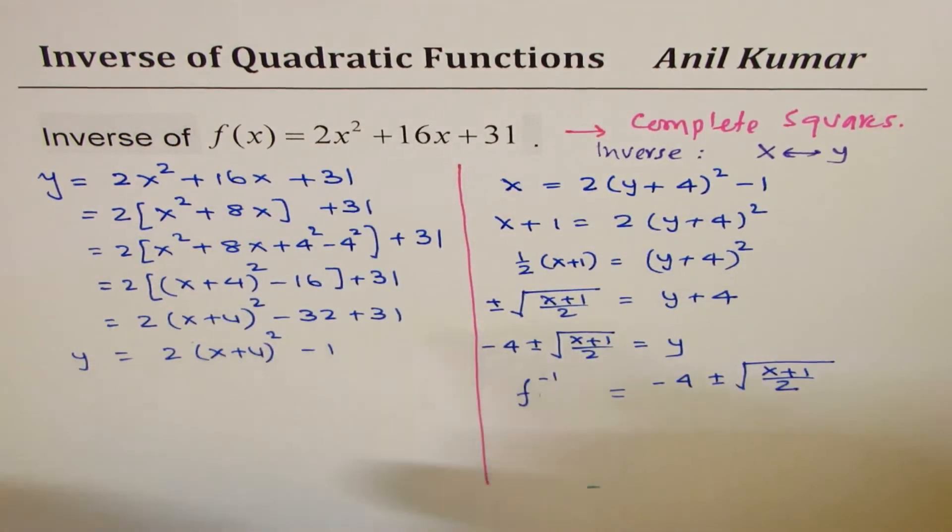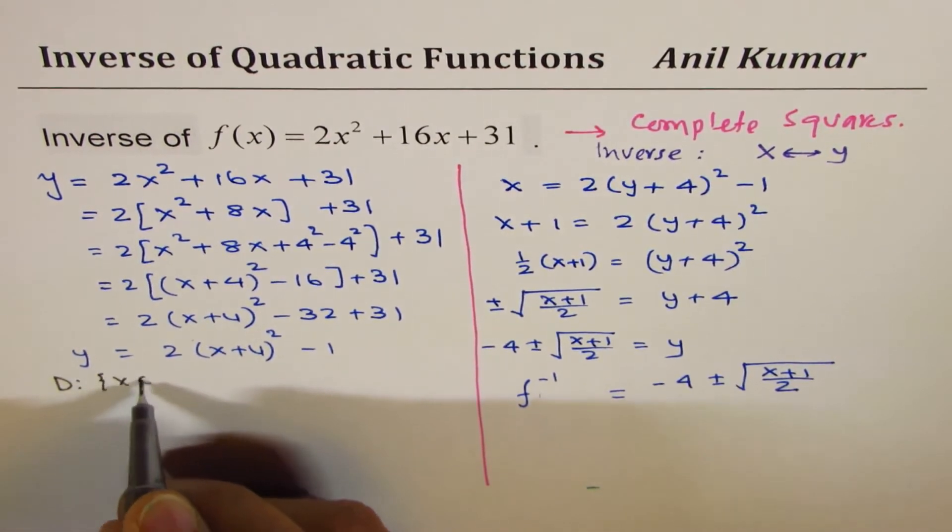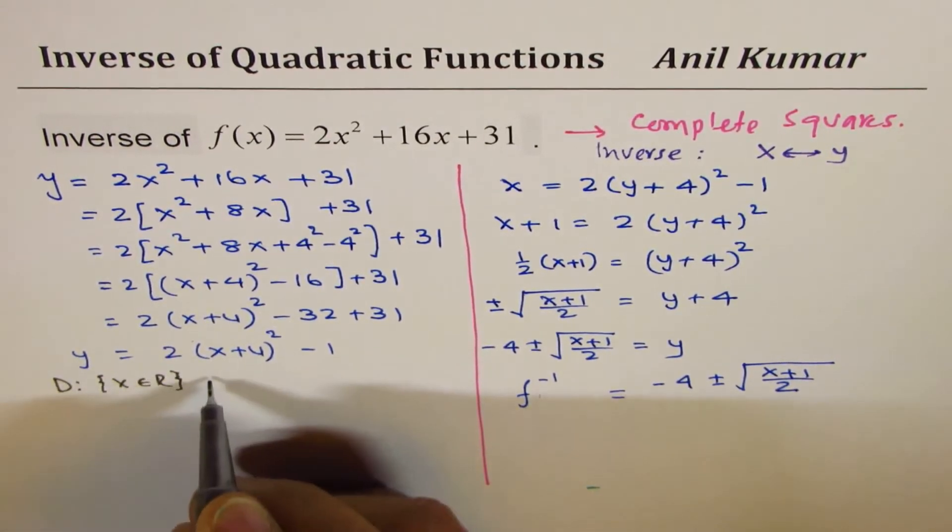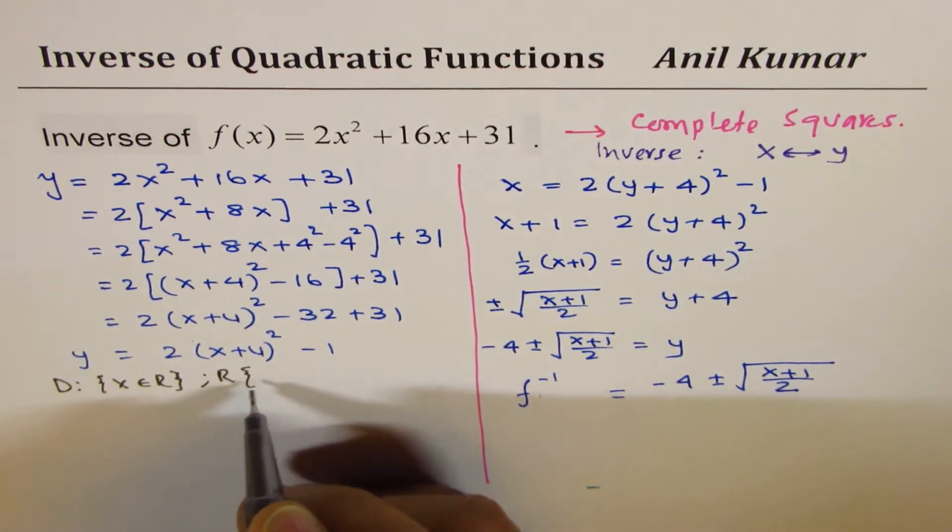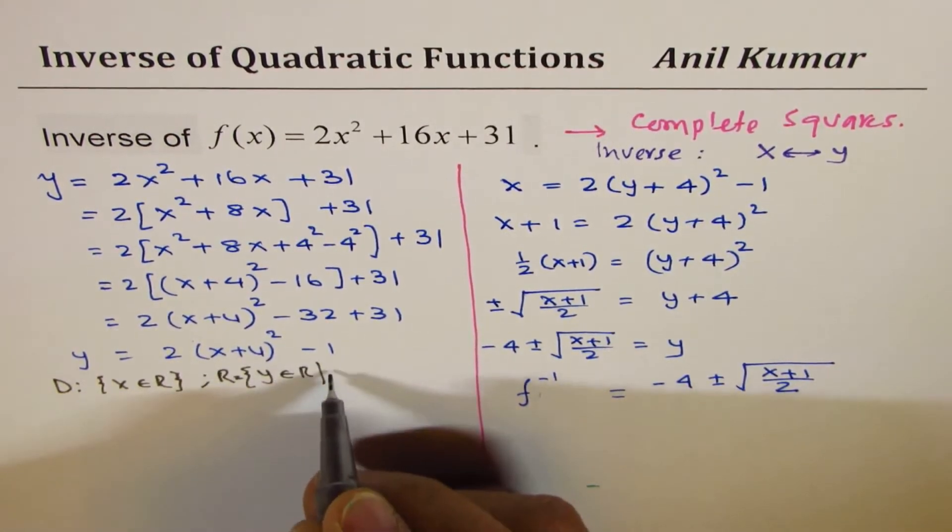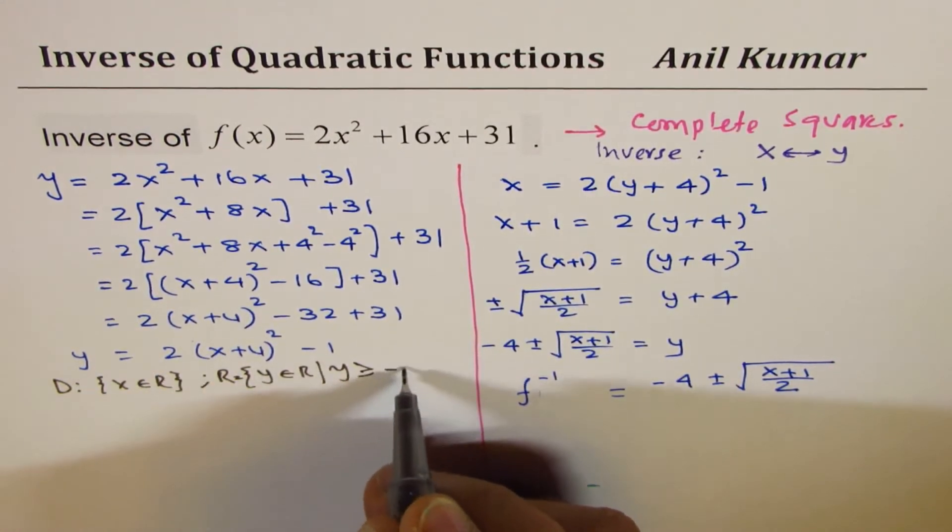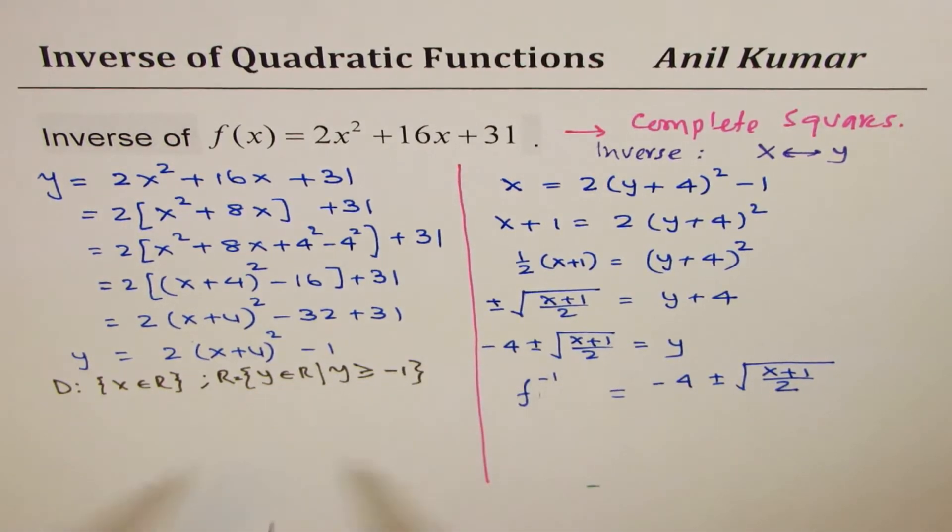Now, there are a few things which we should consider at this stage as a learning process. If you look into the function itself, in that case, the domain is x belongs to real numbers. And the range is y belongs to real numbers. But y is, since it is positive, moving up greater than equal to minus 1.